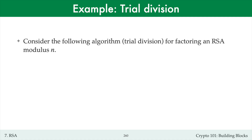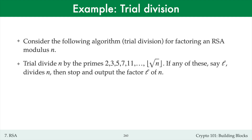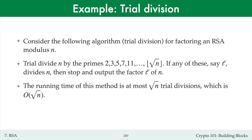Consider the trial division algorithm for factoring RSA moduli n. The algorithm is to trial divide n by the prime numbers 2, 3, 5, 7, 11, and so on, up to the square root of n. If any of these prime factors, let's say l, divides n, then we'll stop and output the factor l of n. The running time of trial division is at most square root of n trial divisions, which is big O of square root of n.